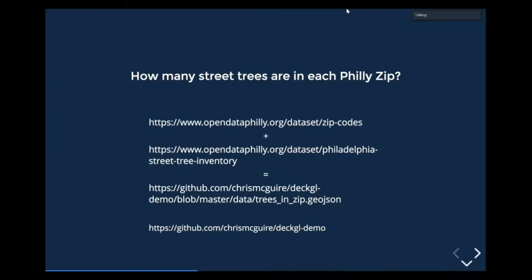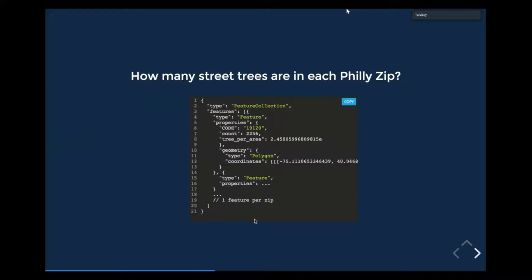What I want to do is walk through building an application using DeckGL. What I want to visualize is how many street trees there are by zip code in Philly. I'm using two data sets from Open Data Philly: the zip code shapes and the Philadelphia street tree inventory — both GeoJSON from Open Data Philly. I'm also combining these in a Python script, which is at github.com/chrismcguire/deckgl-demo. Really all that's doing is combining those street tree points into each zip code shape.